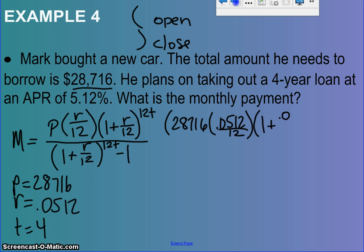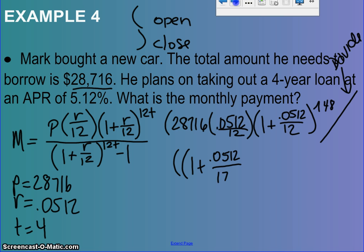Let me rewrite this. We've got 28,716, open parentheses, 0.0512 divided by 12, closed parentheses, open parentheses, 1 plus 0.0512 divided by 12, all to the carrot 48. Once we do that, we're going to hit our division sign, and then it goes to the bottom of the equation. We're going to do open parentheses, 1 plus 0.0512 divided by 12, close parentheses, 48th power, and then it's going to be minus 1, parentheses. You should end up with a final answer of $662.87.